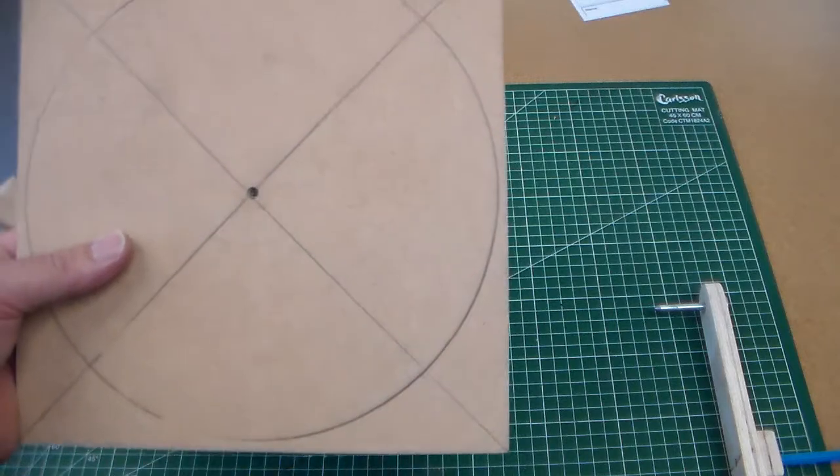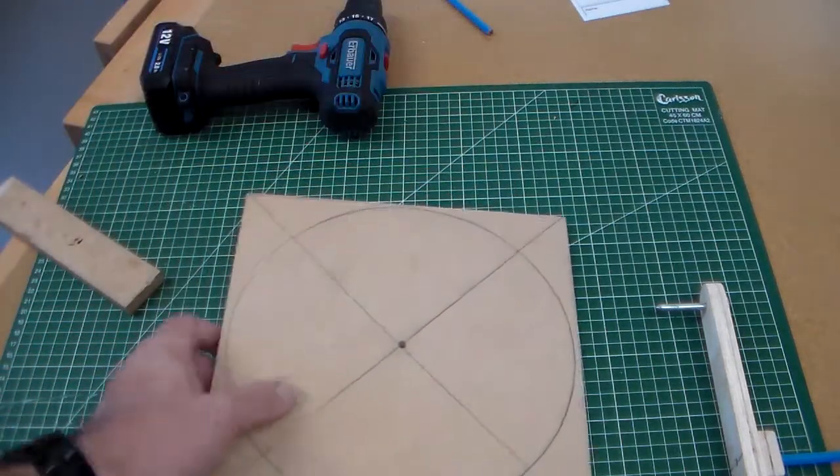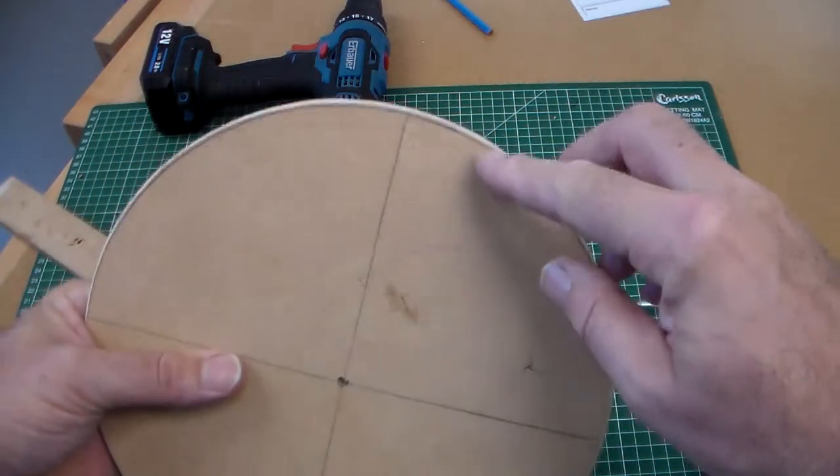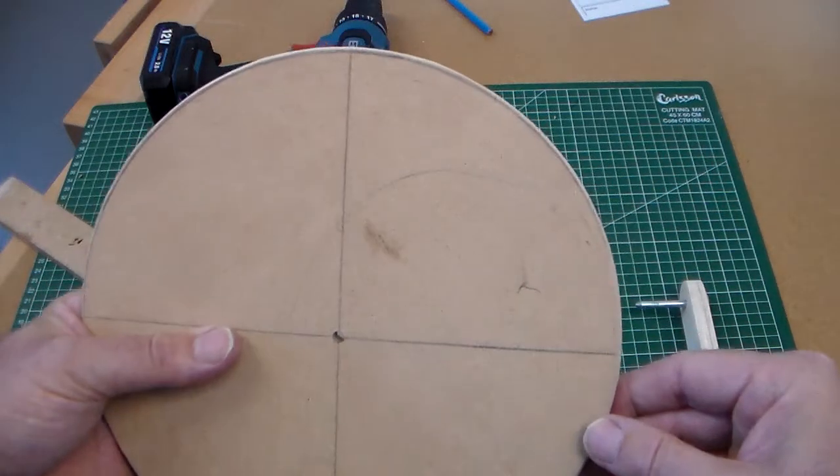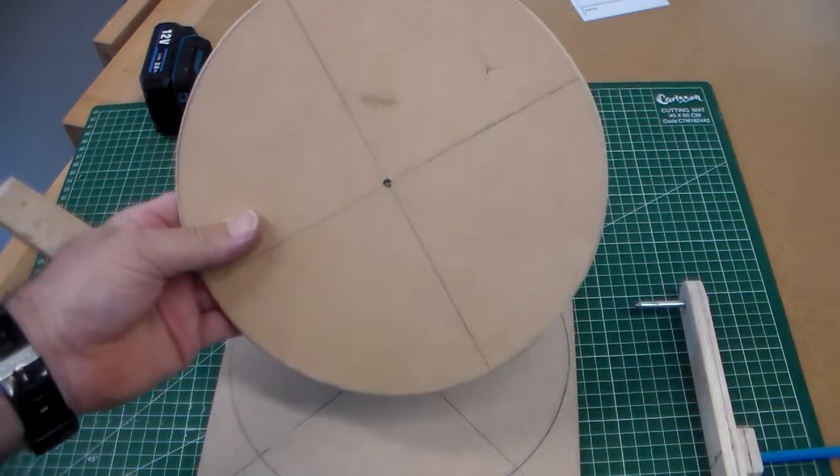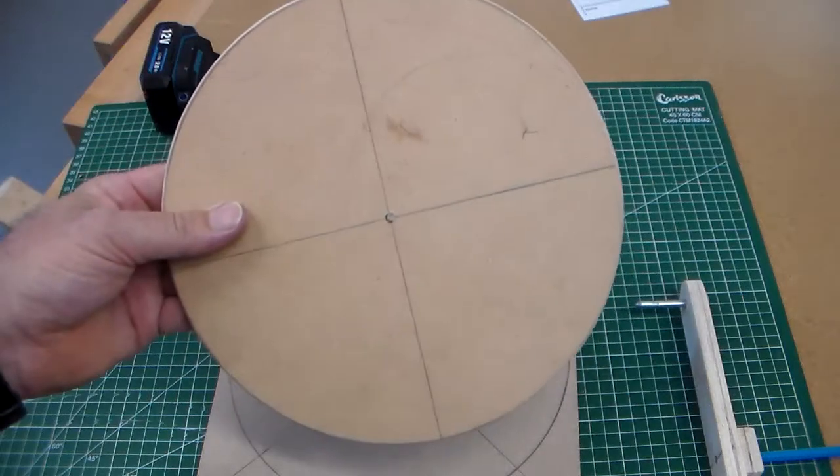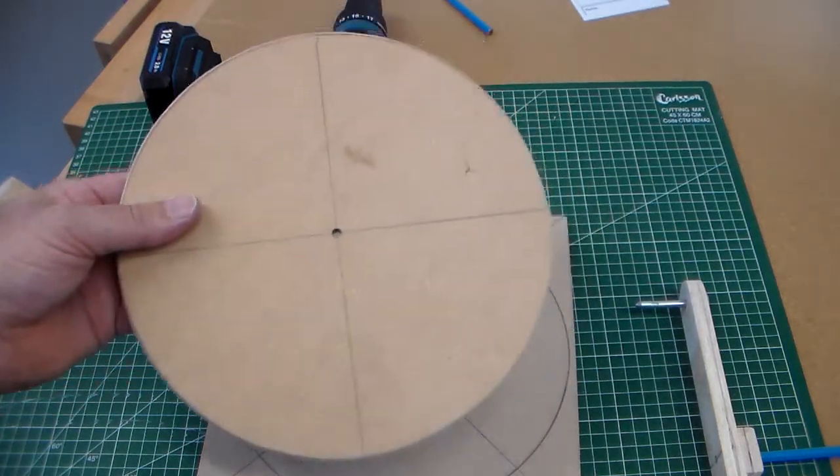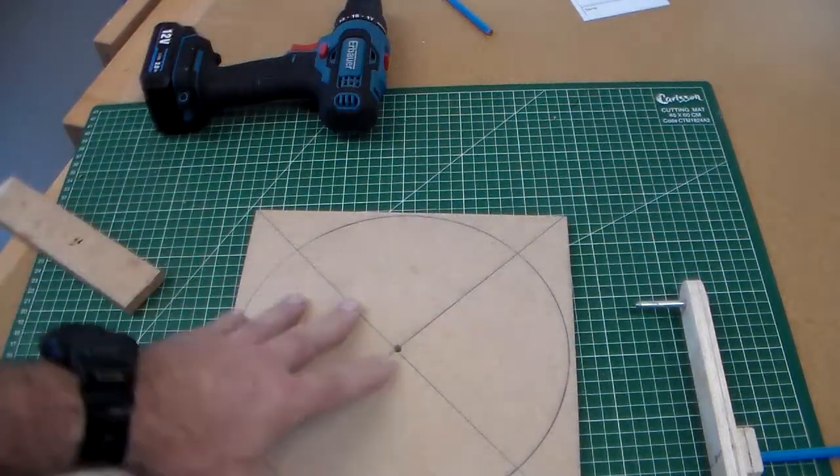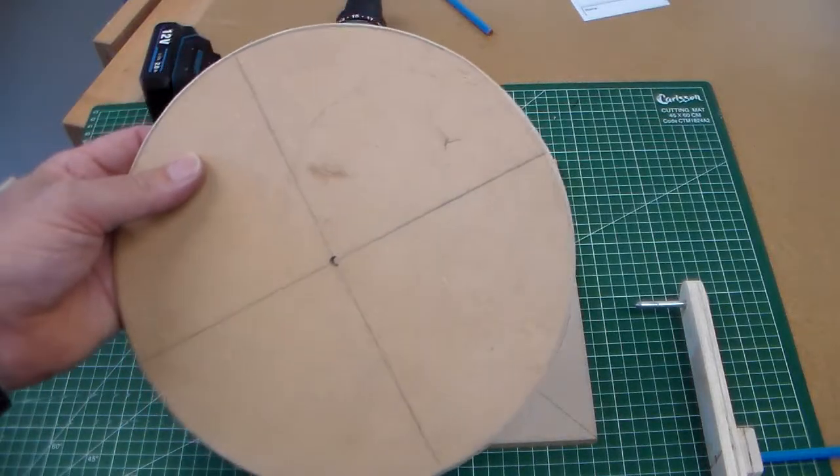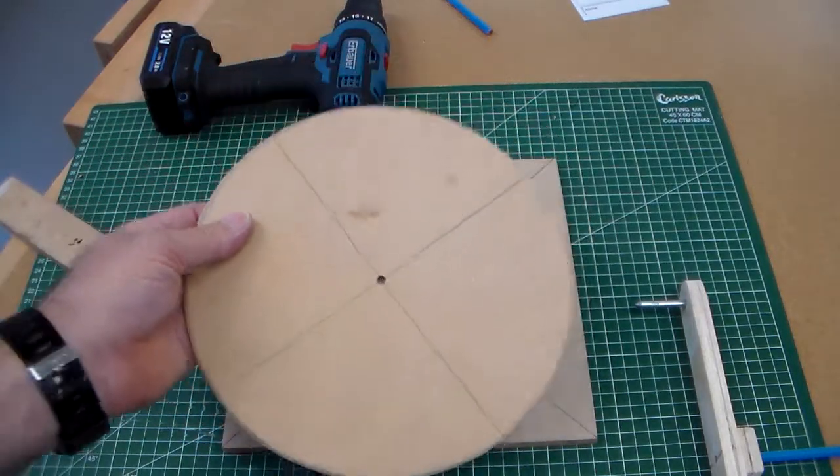And then again sand down to just a millimetre from the line as you can probably see there. And then you'll get your approximately 240mm diameter blank to start making your clock. So that is going from your square of material to your disc.